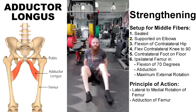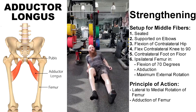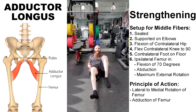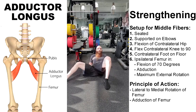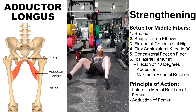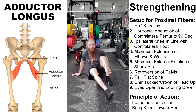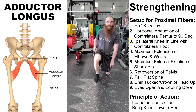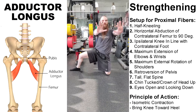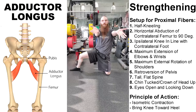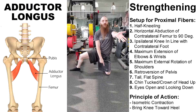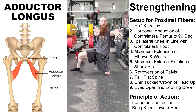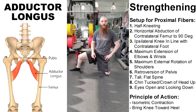For the middle fibers, we're going to be in a seated position supported on our elbows. The contralateral leg is going to be in flexion of the hip and knee. Then with the ipsilateral leg, we're going to go into maximum external rotation of the femur, and we also want the hip and femur flexed to 70 degrees. Principle of action: we're going into adduction from external to internal rotation, and that is for the middle fibers. Then for the proximal fibers, we're going to get into a half-kneeling position, as though you're in the bottom position of a lunge. We want the contralateral knee in line with the ipsilateral foot, then maximum extension of the wrist, maximum external rotation. The principle of action: we're doing an isometric contraction by driving the knee toward the heel, and this is for the proximal fibers. Those are the strengthening exercises for the adductor longus muscle.